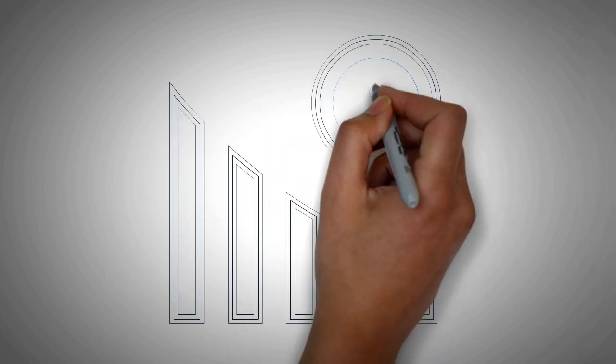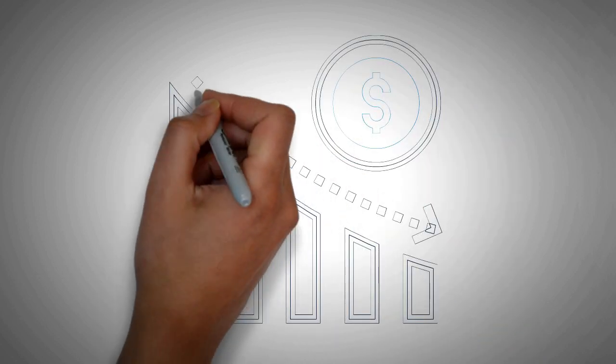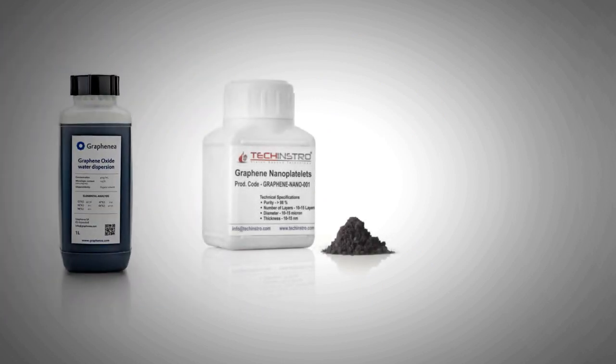However, for graphene to become as ubiquitous as plastics, the price has to come down by at least three orders of magnitude. Small graphene flakes and nano platelets are sold by weight and quality, whereas graphene sheets are sold by size.